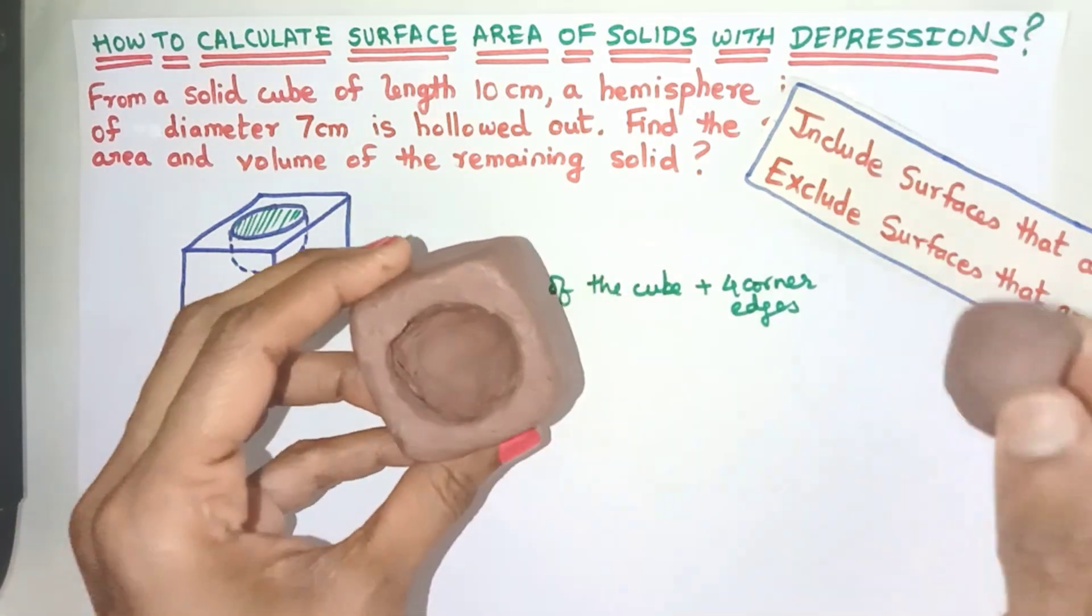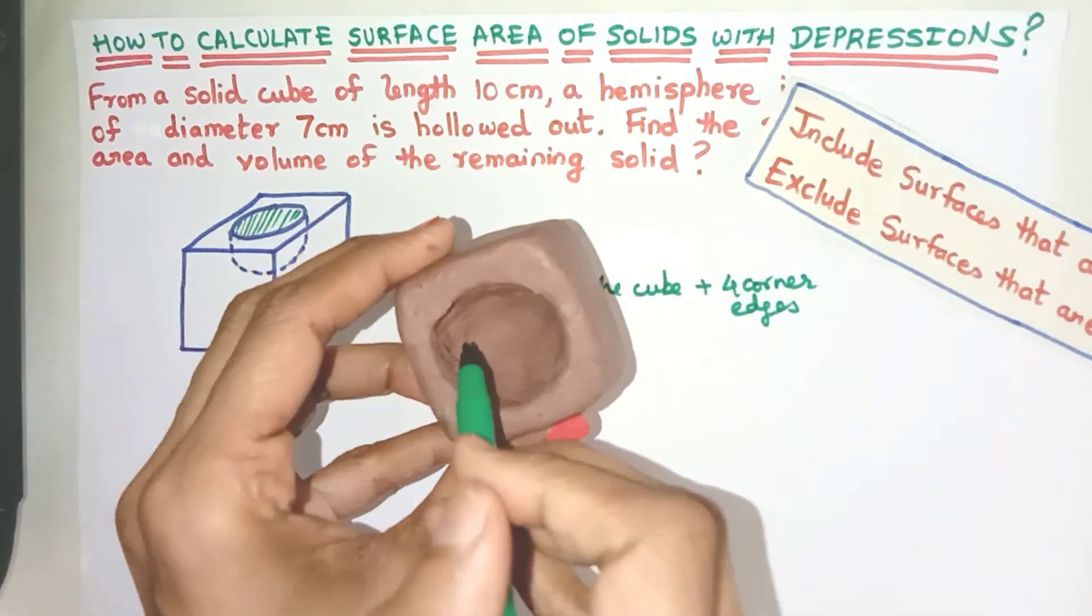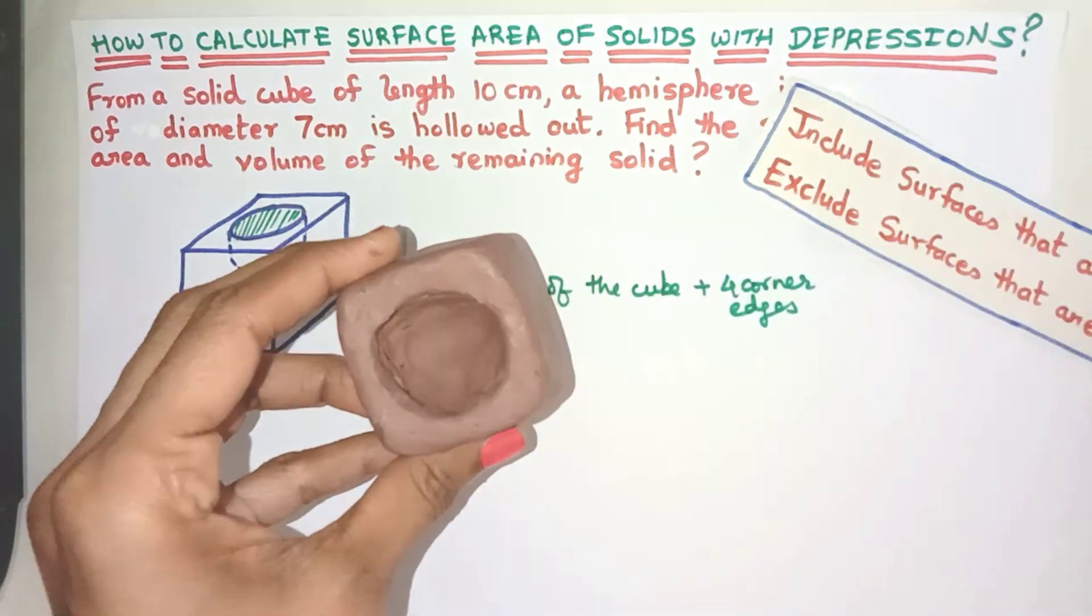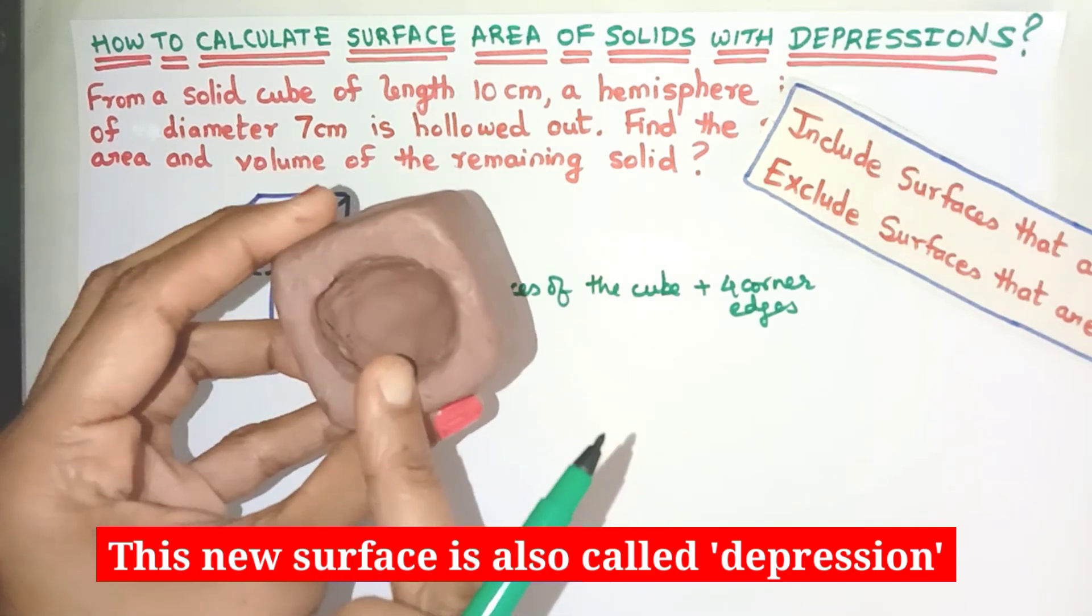Now when we removed this hemisphere, did you also observe that there is a new surface which is created here? See friends, earlier this surface was not there but now we have created this new surface which is hemisphere in shape.